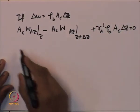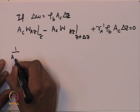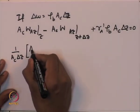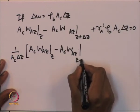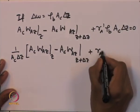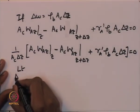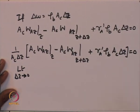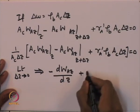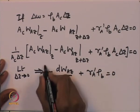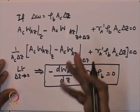Dividing by A_C times delta_z and taking the limit as delta_z approaches zero, the mole balance becomes: minus d(W_Az)/dz plus r_A prime times rho_B equals zero. This is the mole balance for species A undergoing a heterogeneous reaction in a packed bed reactor, where W_Az is the flux of the species at location z.